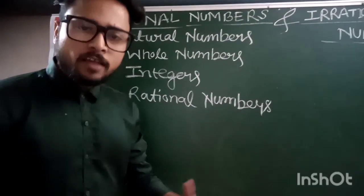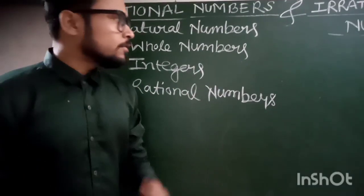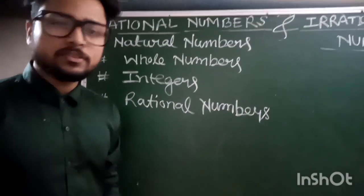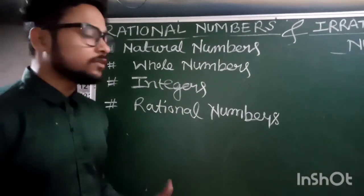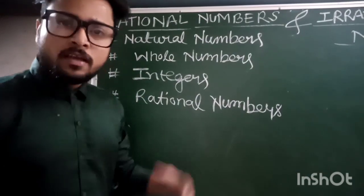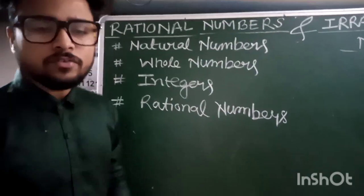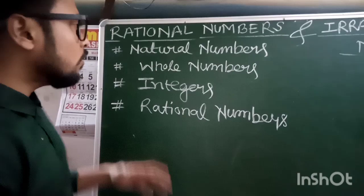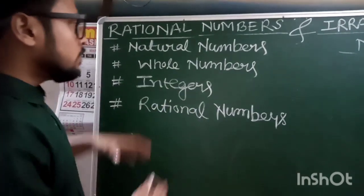We have the family members of the number system: natural numbers, whole numbers, integers, and rational numbers. This order is important for us to understand and to answer statement-based questions.